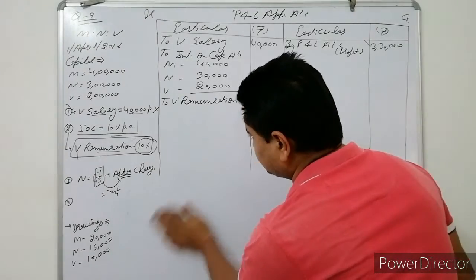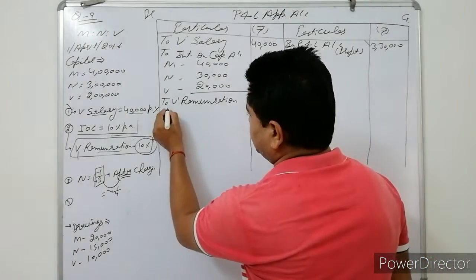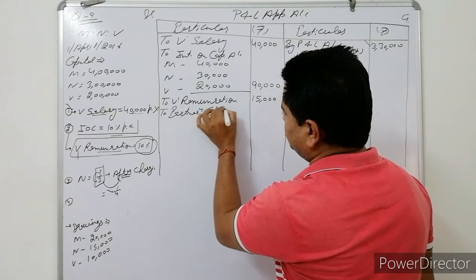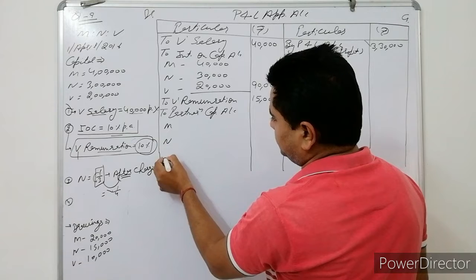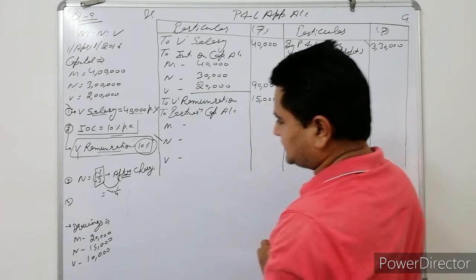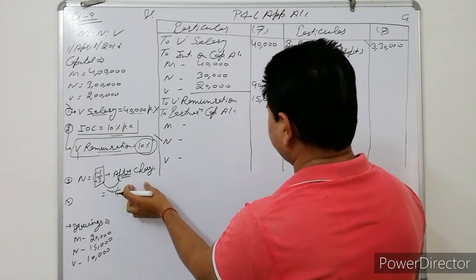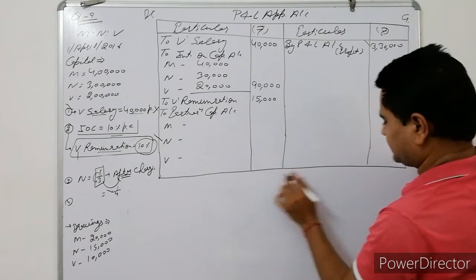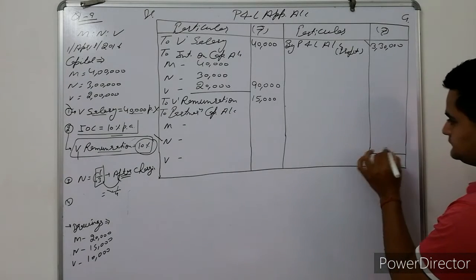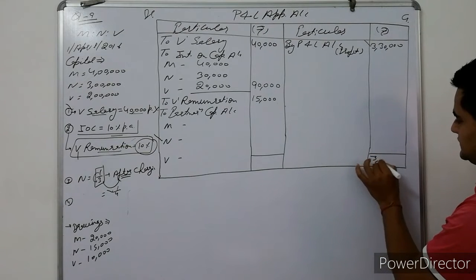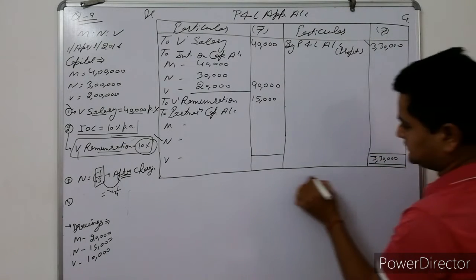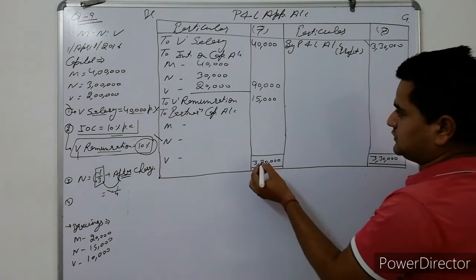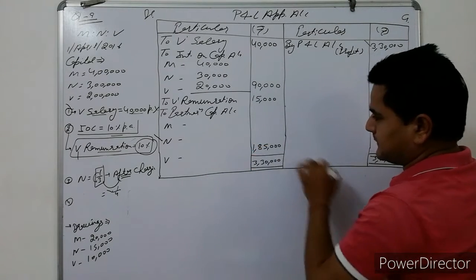Let's calculate the profit for distribution under points 3 and 4. The total credit side is Rs.3,30,000. After deducting salary, interest and remuneration, the remaining profit is Rs.1,85,000.